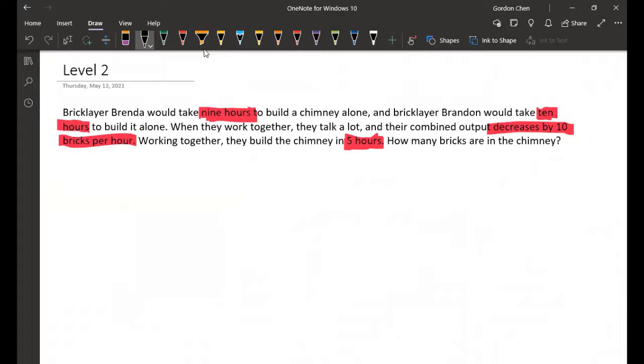So level two, we have two people are building a chimney. So if Brenda builds a chimney alone, she takes nine hours, that means that she spends one-ninth, she builds one-ninth of the chimney in one hour, and Brandon would build one-tenth in one hour.